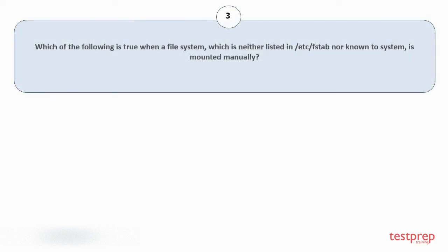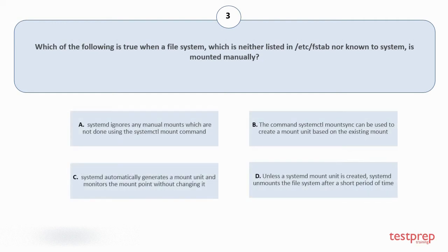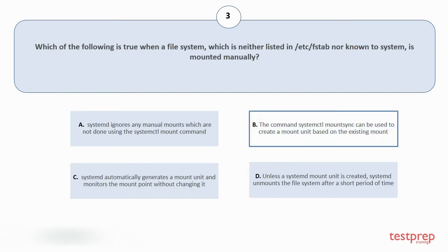Question number 3: which of the following is true when a file system, which is neither listed in fstab nor known to the system, is mounted manually? Your options are: a. Systemd ignores any manual mounts which are not done using the systemctl mount command. b. The command systemctl mount --sync can be used to create a mount unit based on the existing mount. c. Systemd automatically generates a mount unit and monitors the mount point without changing it. d. Unless a systemd mount unit is created, systemd unmounts the file system after a short period of time. The correct answer is option B.